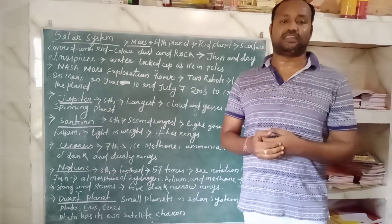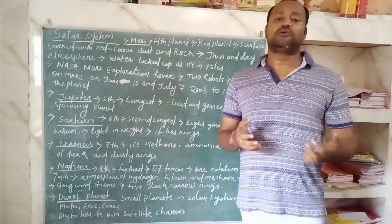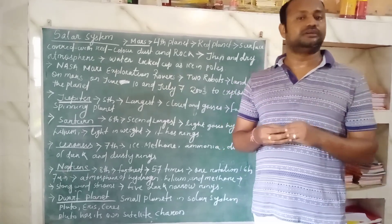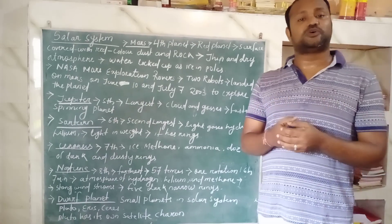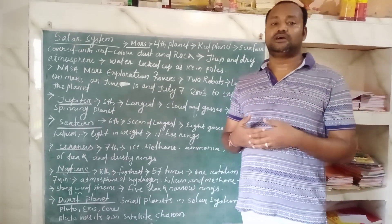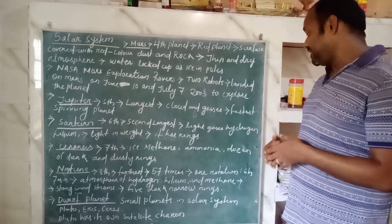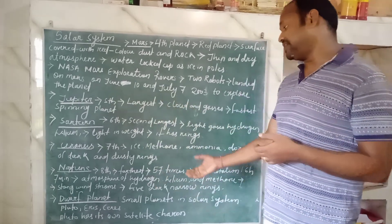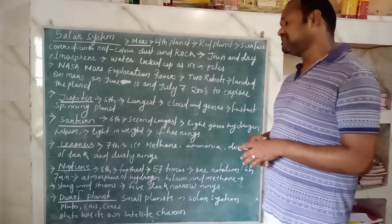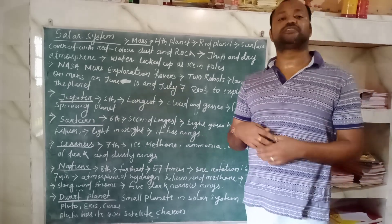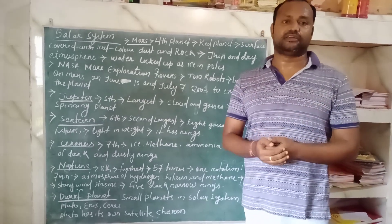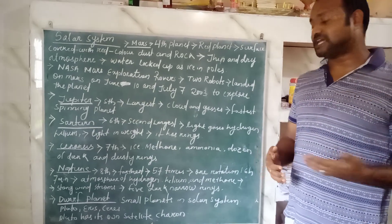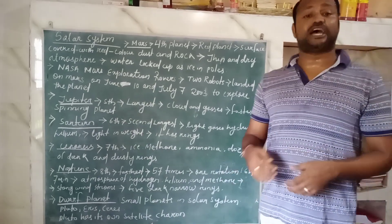Now let's discuss about dwarf planets. Dwarf planets are planets which are very small in size in the solar system. Some examples are Pluto, Eris, and Ceres. Pluto, which is a dwarf planet, has its own satellite which is known as Charon.